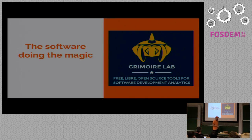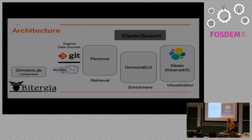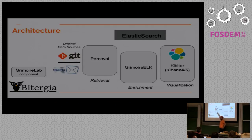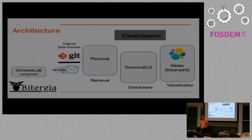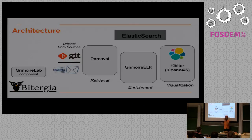Everything is based on GrimoireLab, which is free open source software produced mainly by the company in collaboration with some contributors. GrimoireLab has a very simple architecture. On one side you have repositories — git, mailing lists, and similar — and we have Perceval. Perceval is the data retriever; it can retrieve data from around 20 different data sources related to software development. Perceval gets the information, produces JSON documents including all the information from the original data source, and stores those in Elasticsearch. We call that the raw index.